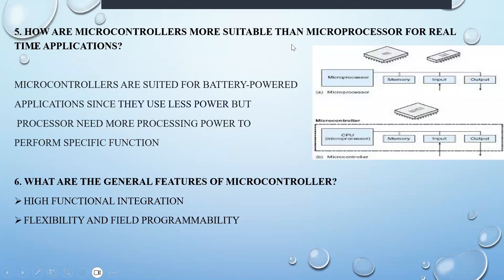How are microcontrollers more suitable than microprocessors for real-time systems? We have moved on to advanced microcontrollers because they are battery-powered applications — they use less power — whereas processors are not. Their processing power is more sufficient to perform any kind of function. What are the general features of a microcontroller? With a small circuit and exact flexibility, it can perform any function in real time.